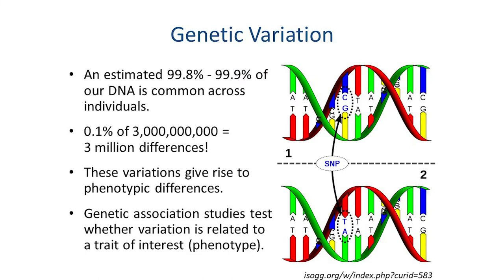This is DNA — you have the sugar phosphate backbone and then the nucleotide bases thymine, adenine, cytosine, and guanine. There are three billion base pairs in the human genome. About 99.9% doesn't differ between people, but 0.1% of three billion is still three million differences between any two individuals, and at the population level that translates to about ten million differences.